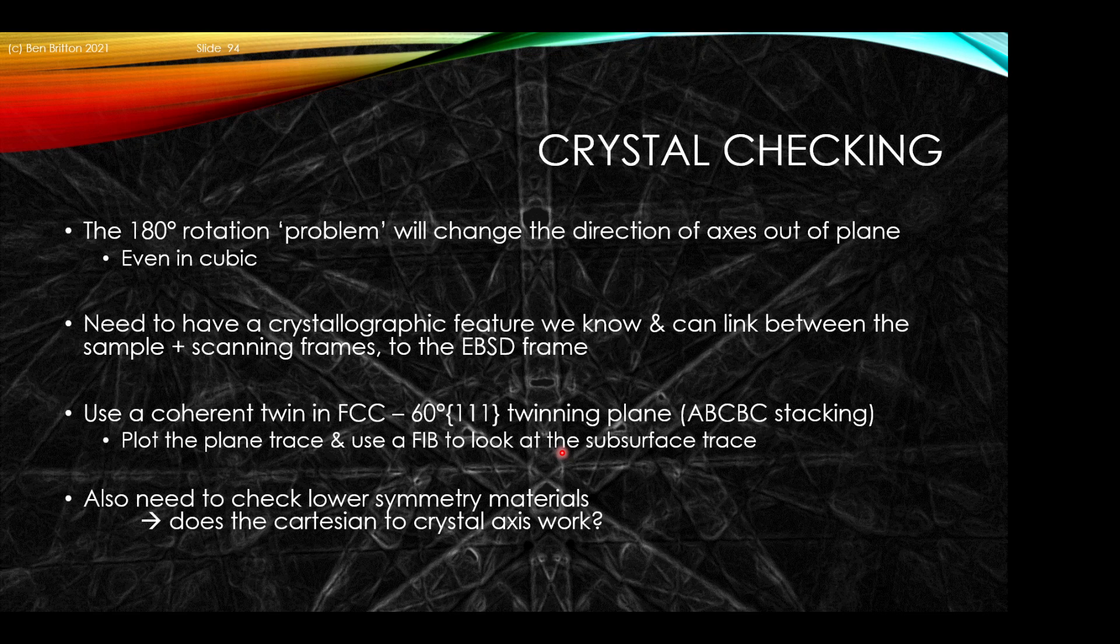The last issue that can happen is we just want to check that we know which way Z is pointing, whether we're considering the outer plane of the sample or into the sample. This will change how we consider planes in 3D and can be very important if you're doing 3D microscopy. This can be really important in cubic crystals. The best way to do this is to have a facet or a crystallographic feature that we know and can link between the sample and scanning frames. For our example we use the coherent twin in FCC. These are the straight grain boundaries shown, typically sigma 3 or 60 degree about 111 twinning planes. If you plot the plane trace and use focused ion beam to look at the subsurface angle, we can check that the plane trace is presented in the right way. Ideally we also want to check lower symmetry materials.